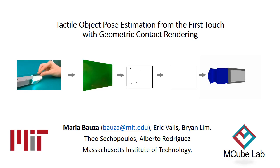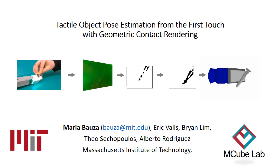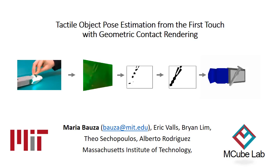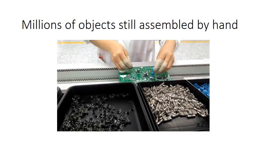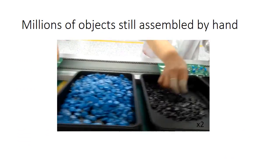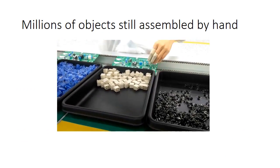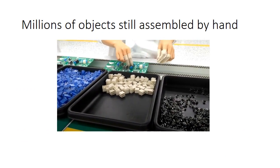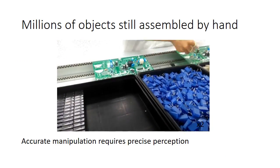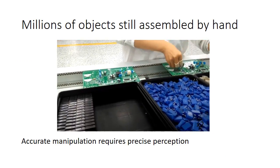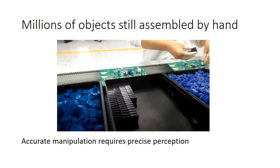My name is Maria Bauzà, and in this video we present our work on tactile object pose estimation from the first touch with geometric contact rendering. Daily, millions of humans assemble objects by hand, even when those are rigid and well-known. If we want robots to achieve the same extent, we must provide them with accurate perception.